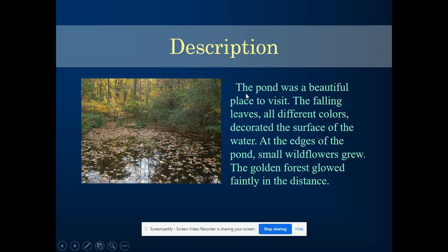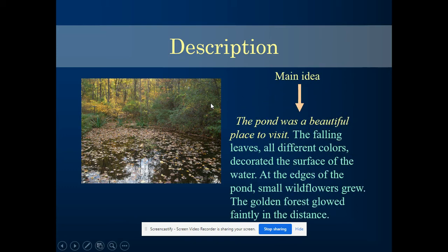It says: the pond was a beautiful place to visit. The falling leaves, all different colors, decorated the surface of the water. At the edges of the pond, small wildflowers grew. The golden forest glowed faintly in the distance. It's given me a ton of details and information, allowing me to paint a picture in my mind. You'll also notice it has a main idea sentence — the pond was a beautiful place to visit — and all of the sentences after tell me why it's beautiful, giving me details and letting me imagine it.